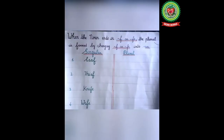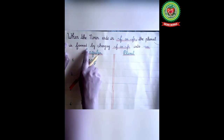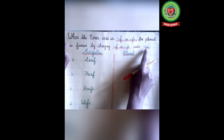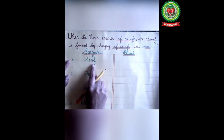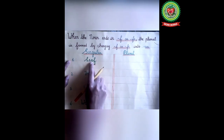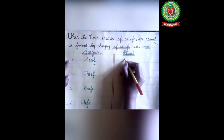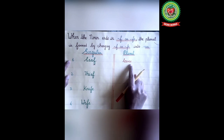Kids, now I will discuss the next two rules with you. The next rule is when the noun ends in F or FE, the plural is formed by changing F or FE into VES. For example, 'leaf' — the singular noun ends with F, so we make it plural by adding VES: leaves.